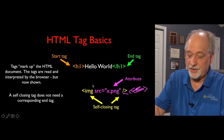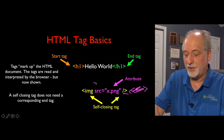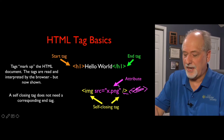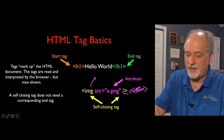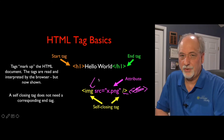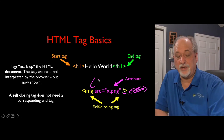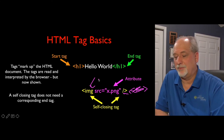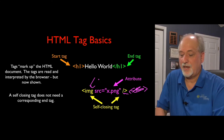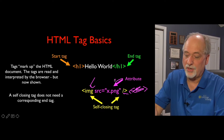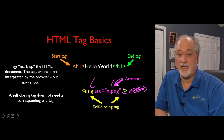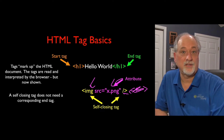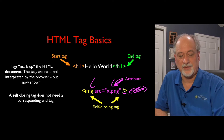Another thing you will get used to is the fact that you can put attributes on the opening tag — key-value pairs. You'll read the documentation on the image tag and it'll say to put a source attribute on to say what picture, what file we want to display. The image tag is to show pictures, basically.